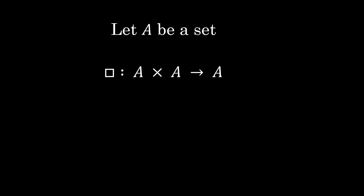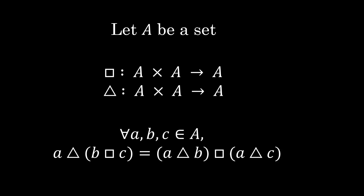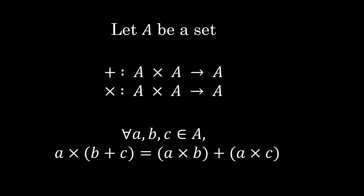Let's say we have a set of objects A and two binary operations on A. Let's call the first one the square operation and the second one the triangle operation. If we notice that one operation is distributive over the other, then by convention we say the square operation is addition and the triangle operation is the product, and we give them notations according to this naming.